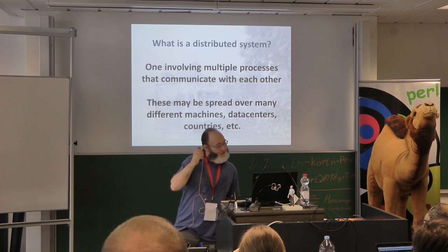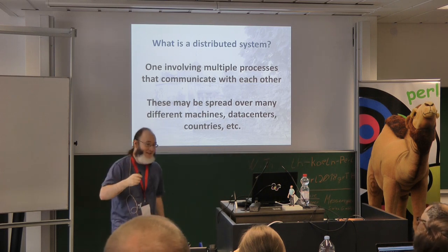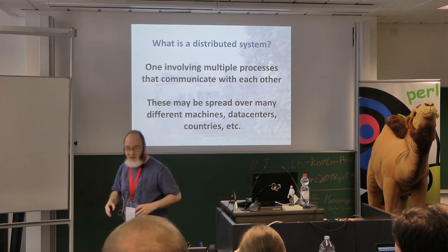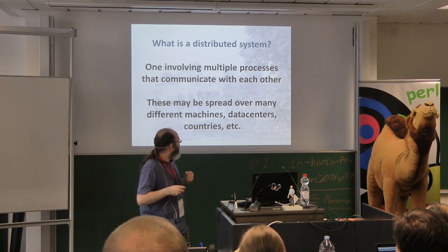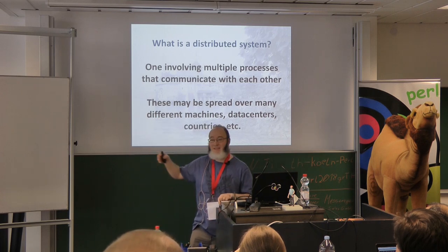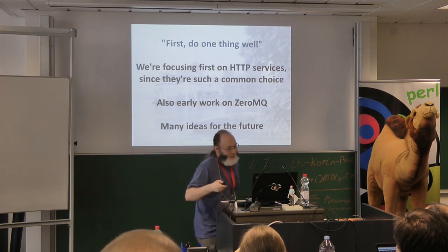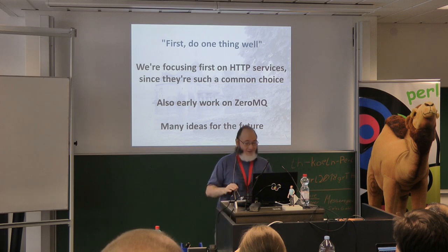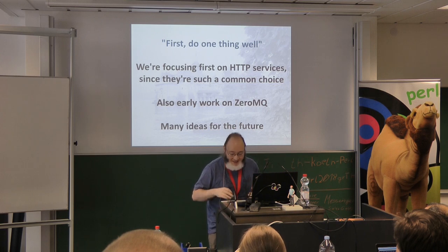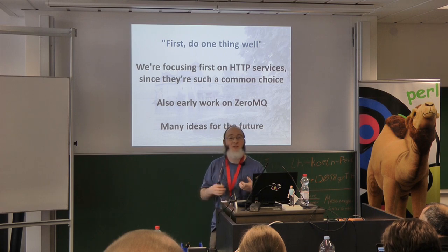What is a distributed system? A distributed system is one that involves multiple processes that communicate, spread over many virtual machines, real machines, data centers, and so forth. The defining characteristic of a distributed system is that in the limit, the answer to 'is it working?' is 'some of it.' Building something for distributed systems in general is a pretty big task.